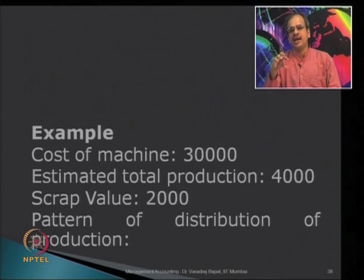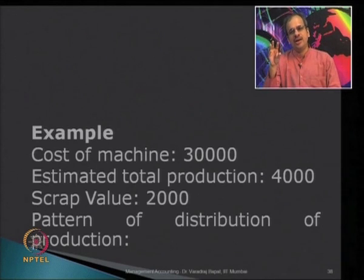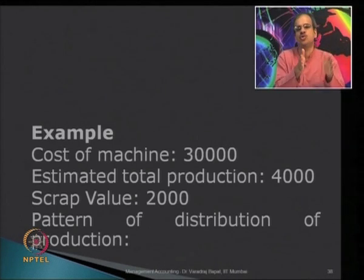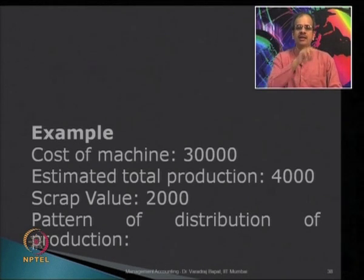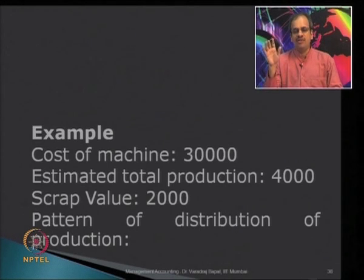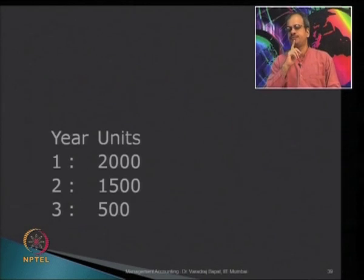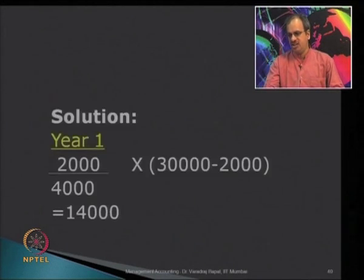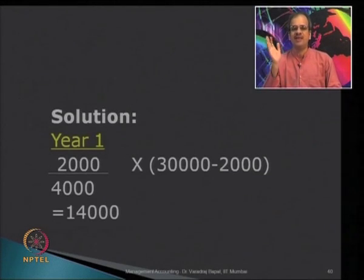Can you calculate the estimated depreciation per unit? The depreciable amount is 30,000 minus 2,000 equals 28,000, to be depreciated over the life. Total estimated production is 4,000 units. So 28,000 divided by 4,000 equals 7 rupees per unit. It is estimated that the highest use of 2,000 units will be produced in year 1, reducing to 1,500 in year 2, and only 500 in year 3. Depreciation is now calculated proportionately.